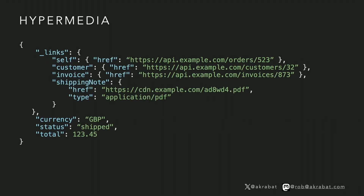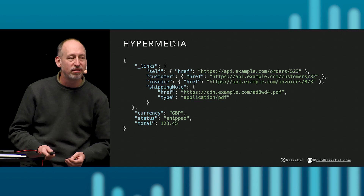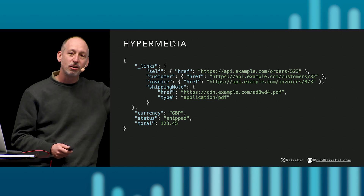Here's a little bit of code that explains this — I said it'd be technical. Here's a JSON representation in a media format known as HAL. The key section is the link section. This represents an order: status of shipped, grand total of £123.45. What will the customer want to do with this data? Maybe they want to get the customer, the invoice, the shipping note. I've provided the relevant links directly so the client can go and do the next steps automatically. And I can change those domain names and the client will still work.